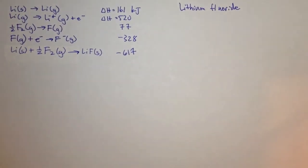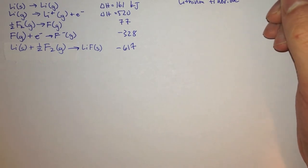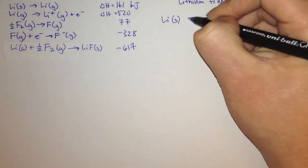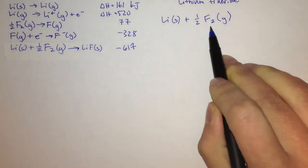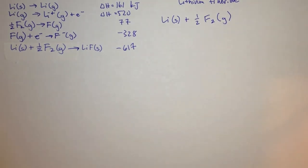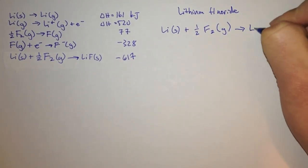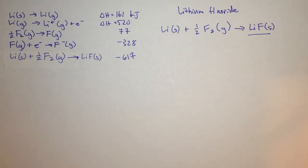Let's look at a different problem — the formation of lithium fluoride. Lithium comes to us at room temperature as a solid, and we add F2 because fluoride is a diatomic, which means it can bond with itself, to create lithium fluoride as a solid. This is another ionic compound with a lattice structure, so we can solve it the same way.